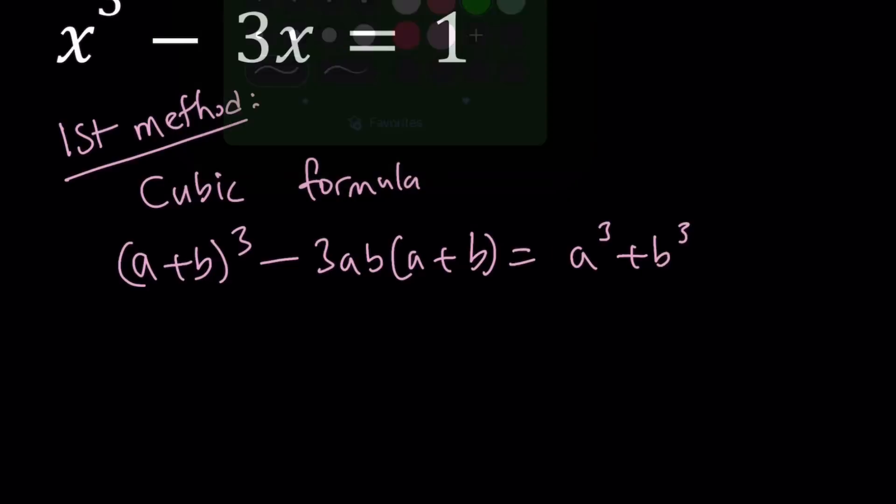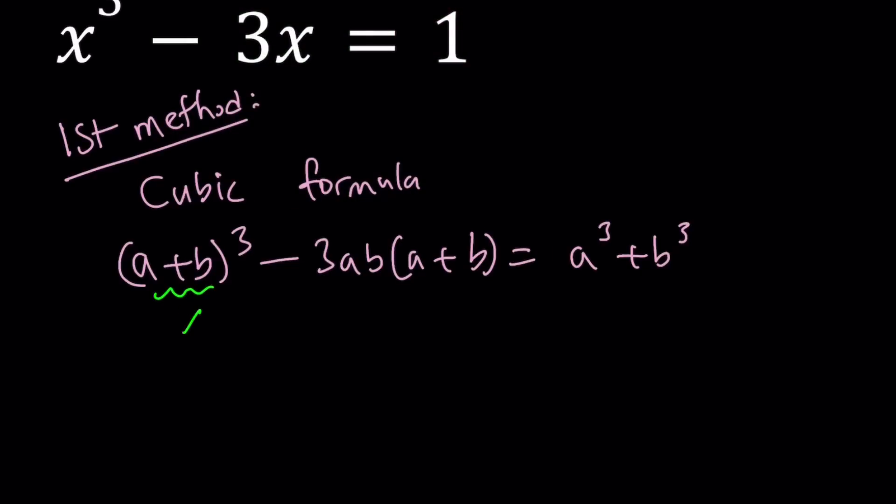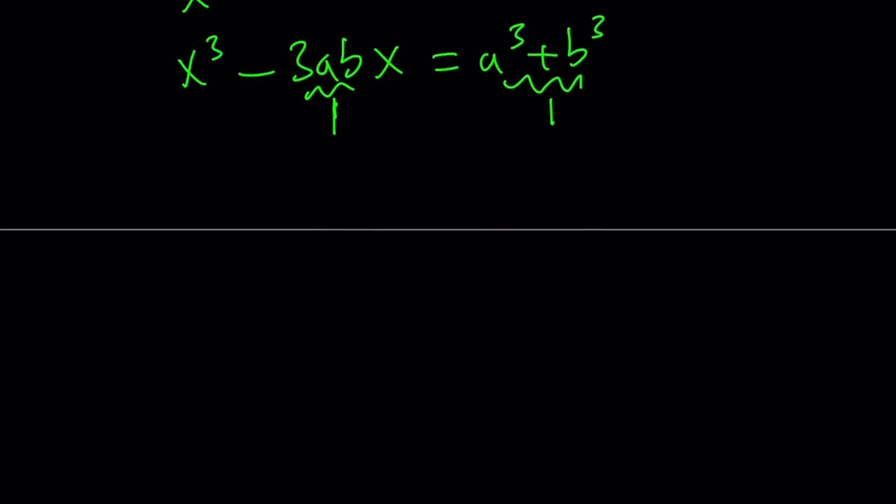Here, I'm going to make a substitution. Let's call x = a + b. And then, if you compare this equation to the other equation, I can write this as x³ - 3abx = a³ + b³. You're going to notice that the coefficient of x is negative 3, and here it's negative 3ab. So, 3ab must equal 1, and a³ + b³ is the constant term, which also needs to equal 1. So, we get a very basic system from here.